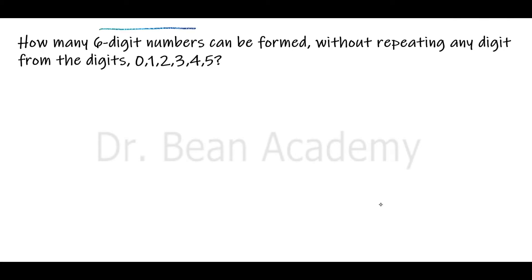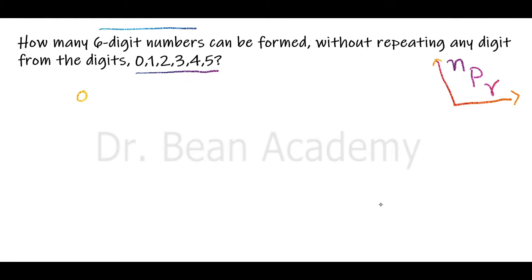How many six-digit numbers can be formed without repeating any digit from the digits 0, 1, 2, 3, 4, 5? This problem is related to permutations and no repetition is allowed. We need to find how many six-digit numbers can be formed without repeating any digits. The given digits are 0, 1, 2, 3, 4, and 5.